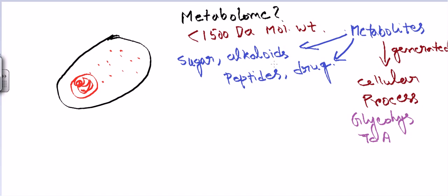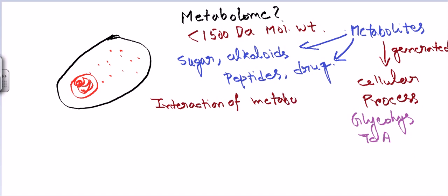You can imagine there are many different types of metabolic pathways present, so you can imagine how many different types of metabolites can be found inside a cell — countless types. Now all these metabolites present inside the cell are not just present on their own, because they are always interacting with each other, and that is the most important part. We are focusing on the interaction of metabolites.